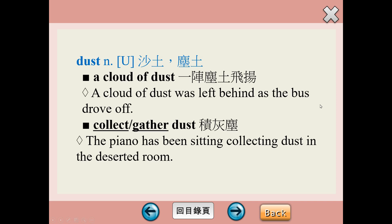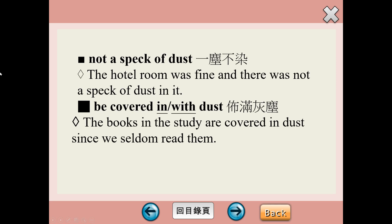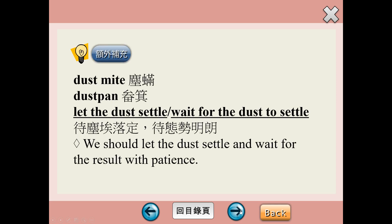如果一個空間常常沒有清掃，就會積灰塵，積灰塵的積，我們用collect或者是gather。如果你把一個空間打掃得非常的乾淨，英文上有一個片語叫做not a speck of dust，意思就是一塵不染。Be covered in或be covered with dust，就是布滿了灰塵。常常在買清潔具的時候看到的廣告，抗塵蟎，塵蟎英文叫做dust mite。Dust pan呢，就是我們的畚斗、畚箕。